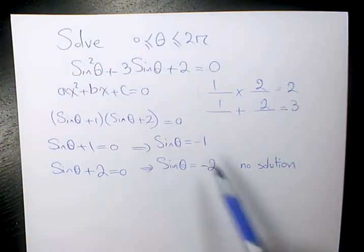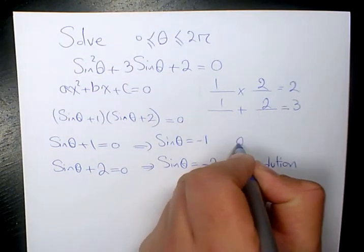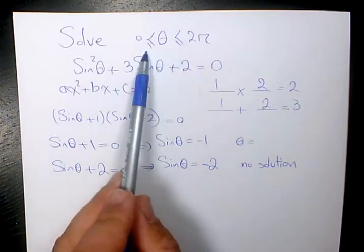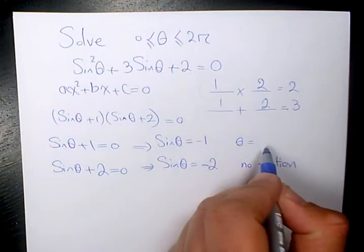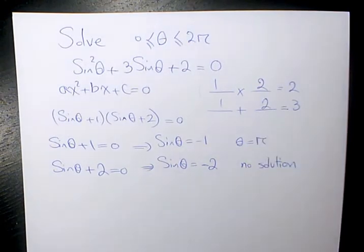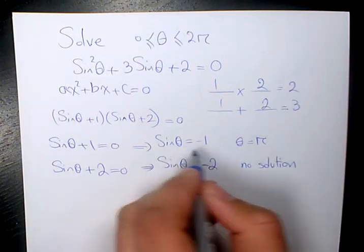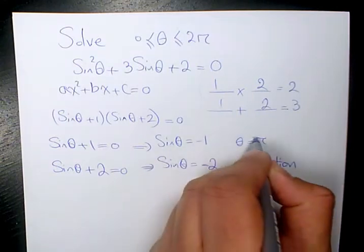On the other hand, we have sine theta equals to negative 1. We need to find out what theta value or values make sine theta equals to negative 1. From 0 to 2 pi, we have only one value, which is going to be 3 pi over 2.